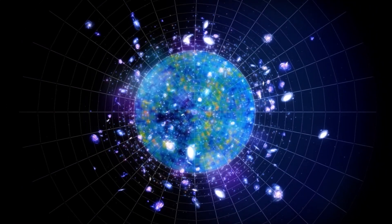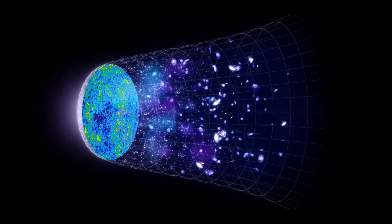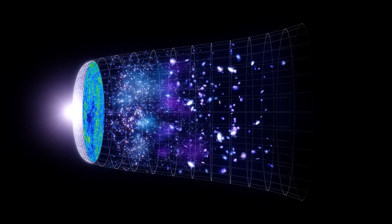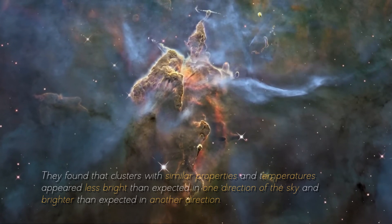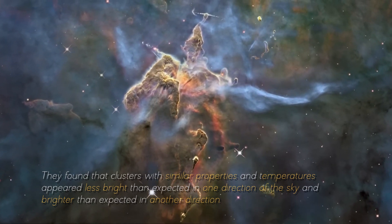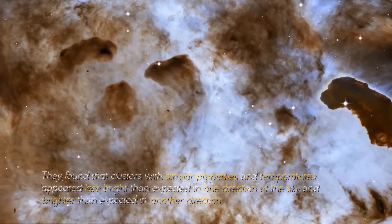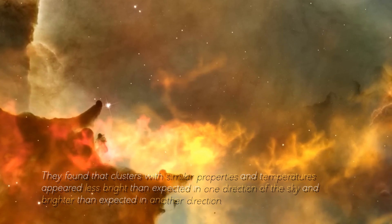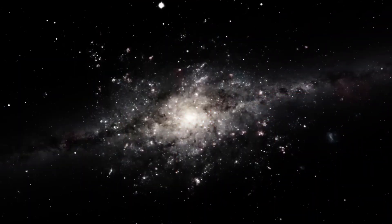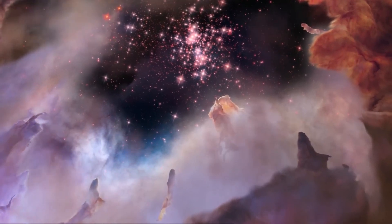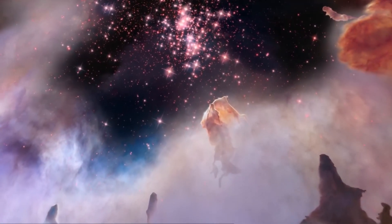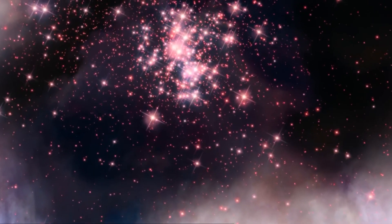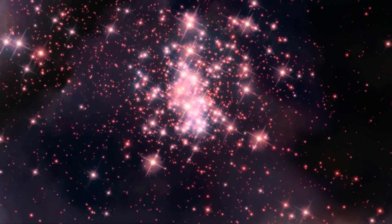They compared data from X-ray temperature readings of the extremely hot gas found in the clusters with the brightness appearance of the clusters in the sky. One would expect clusters with the same temperatures and the same distance to appear equally bright, but this is not what was found. They found that the clusters with similar properties and temperatures appeared less bright than expected in one direction of the sky and brighter than expected in another direction. These differences were quite significant, hovering around 30% variation. Moreover, these variations were not random but followed a distinctive pattern depending on the direction in which you looked at the sky.